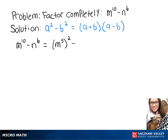Because when you raise an exponent to an exponent, you multiply those exponents. So now we can rewrite that as m to the fifth plus n to the third, times m to the fifth minus n to the third.